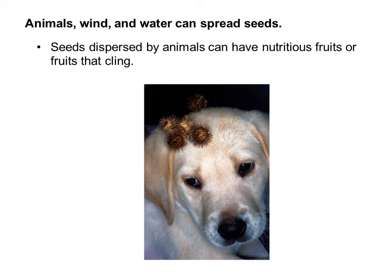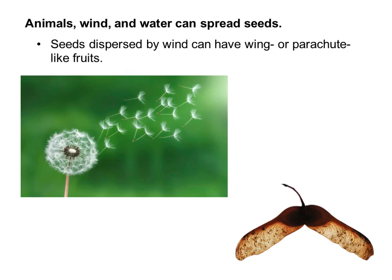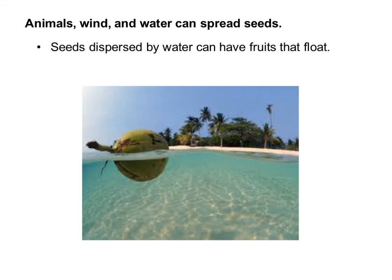Besides being eaten and spread around, animals can also spread seeds that cling or stick to them, like this poor puppy with burrs on his head. The animal would travel a distance and hopefully brush them off somewhere else, spreading the seeds to a new location. Seeds also can be adapted to spread by wind, with wing-like or parachute-like fruits that carry them through the air.